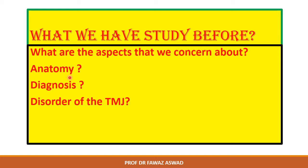We considered the etiological factors, including initiating and predisposing factors affecting the TMJ. The initiating factors range from psychological to occlusal factors. Factors influencing the masticatory system include behavioral, social, and emotional factors. We also covered the effect of occlusion — open bite, overjet, unilateral lingual crossbite, and related conditions.